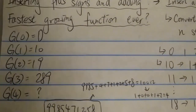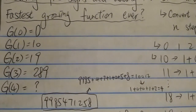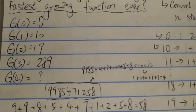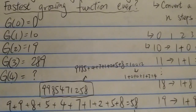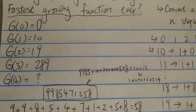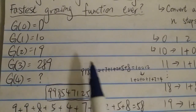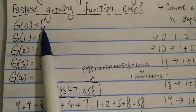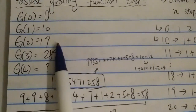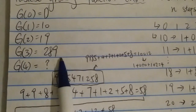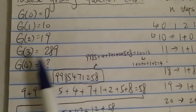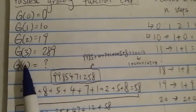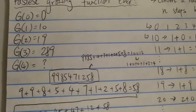Hi everyone. Today I'm going to try to show you something pretty mind-blowing. I'm going to show you a sequence. So g0 is 0, g1 is 10, g2 is 19, g3 is 289, and g4 is a question mark. So what do you think g4 is?